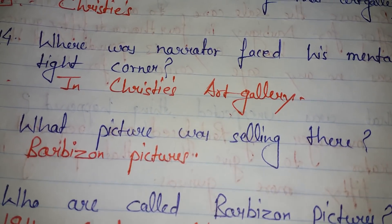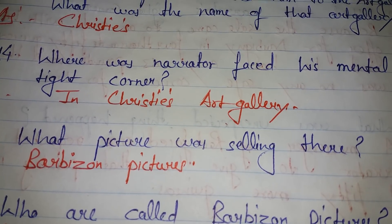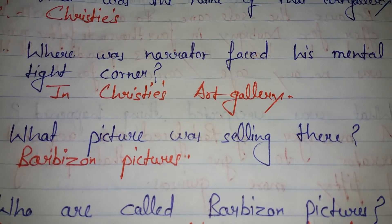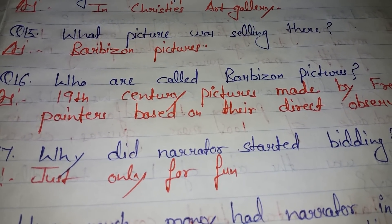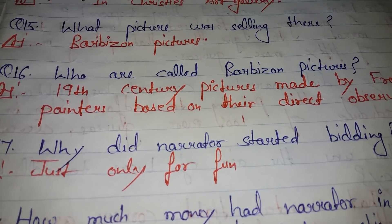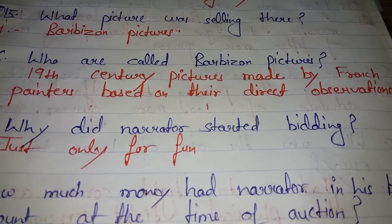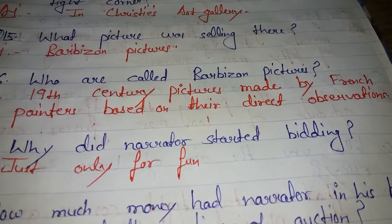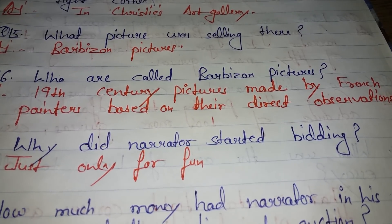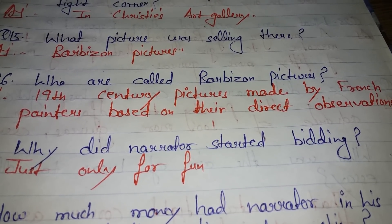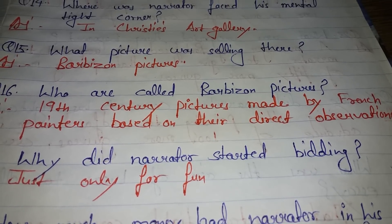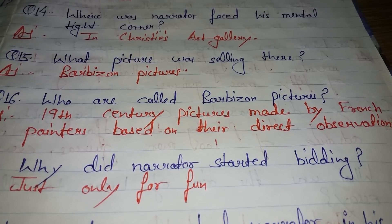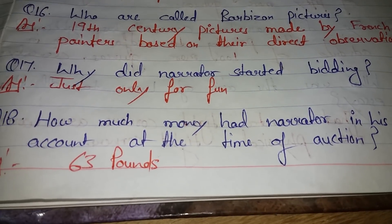Where did the narrator face his mental tight corner? In Christie's art gallery. The pictures selling there were Barbizon pictures. Barbizon pictures are 19th-century pictures made by French painters based on their direct observations of real things — they painted meadows, pools, and natural scenes.